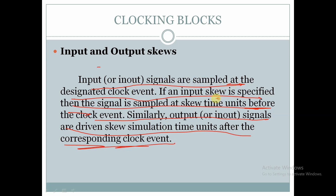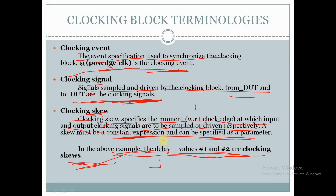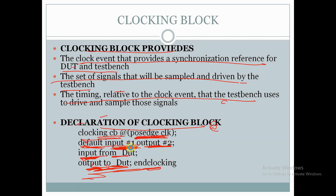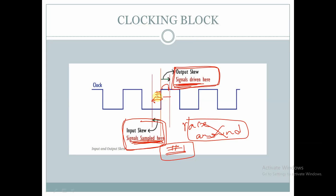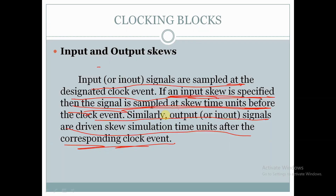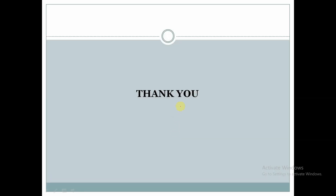So, if an input skew is specified, the signal is sampled at skew time units before the clock event. Here we have mentioned 'input #1', so the signal is sampled one time unit before the clock edge. We have mentioned the output skew as #1, so the signals are driven after one time unit. This is all about clocking blocks in SystemVerilog. Thank you for watching this video.